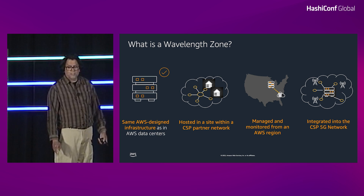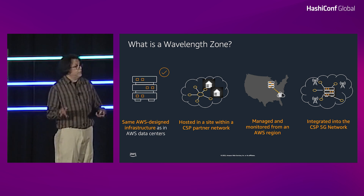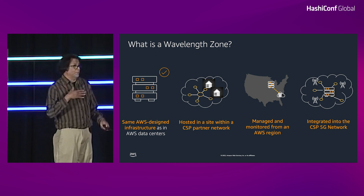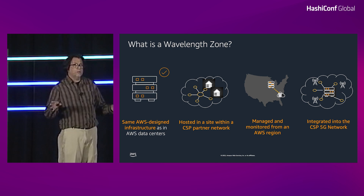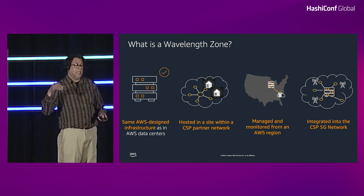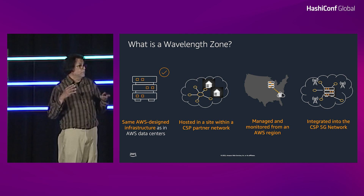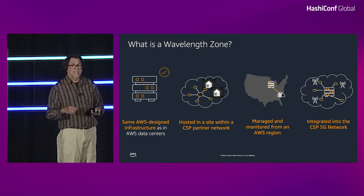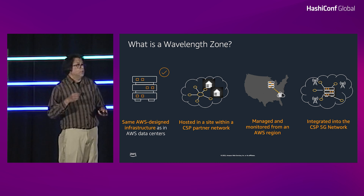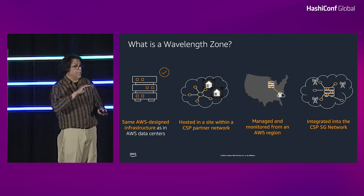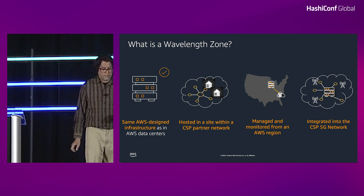It has the same pace of innovation and it's geographically distributed. The coolest thing is that this AWS infrastructure you're all used to using is extended into our actual metropolitan aggregation points — it's actually in our 5G data centers. So when you connect to an app on a Wavelength Zone, you're connecting directly with no internet hops.